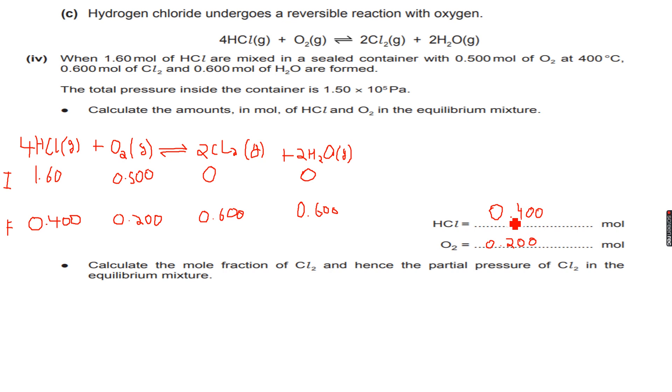Now the second part tells us calculate the mole fraction of Cl2 and hence the partial pressure of Cl2 in the equilibrium mixture. So the total number of moles I will get by adding all of this. Mole fraction of Cl2 is equal to—first let's calculate the total number: 0.4 plus 0.2 is 0.6, 0.6 plus 0.6 is 1.2, 1.2 plus 0.6 is 1.8. So 1.8 is my denominator and I have 0.6 moles of Cl2.